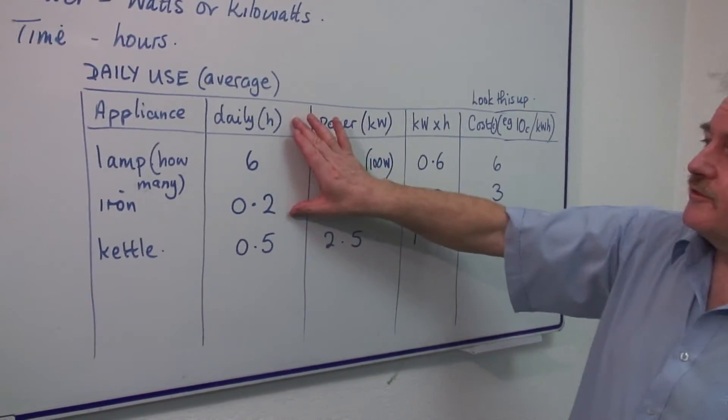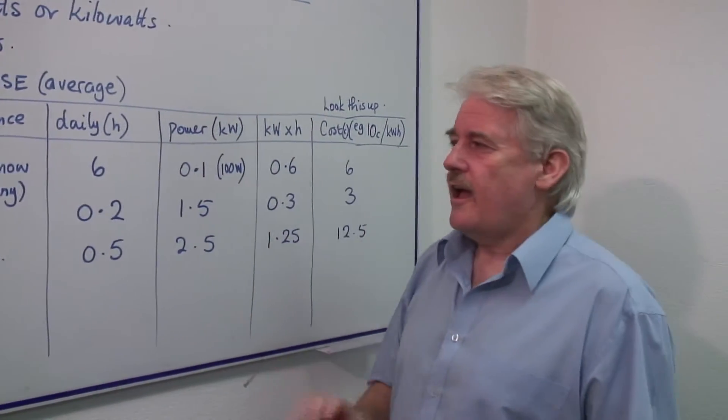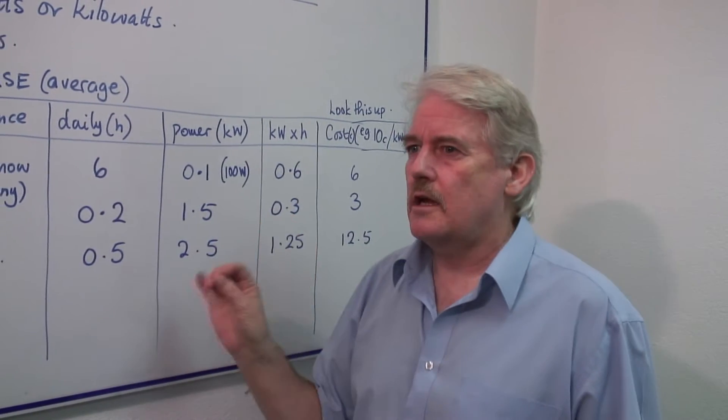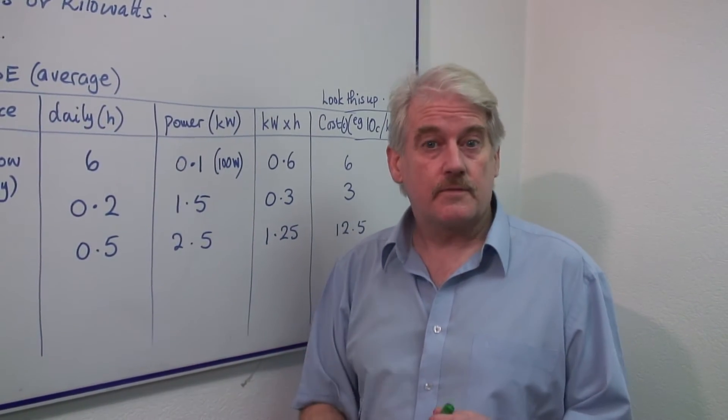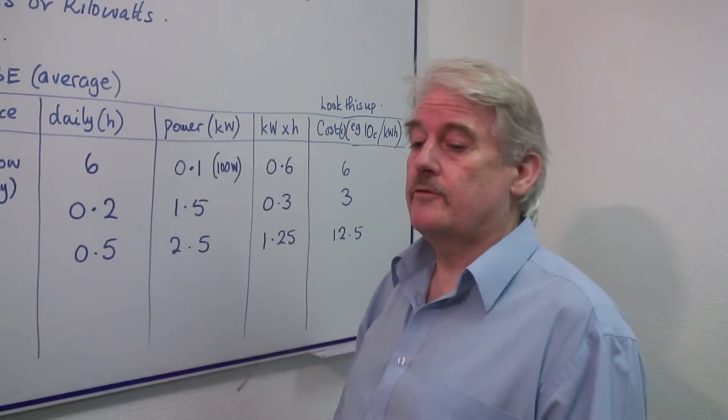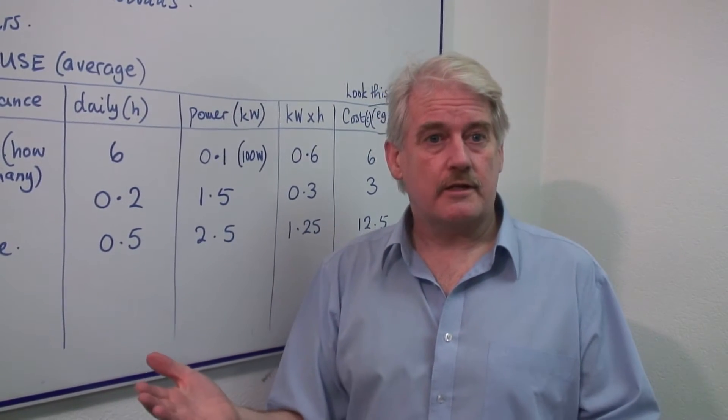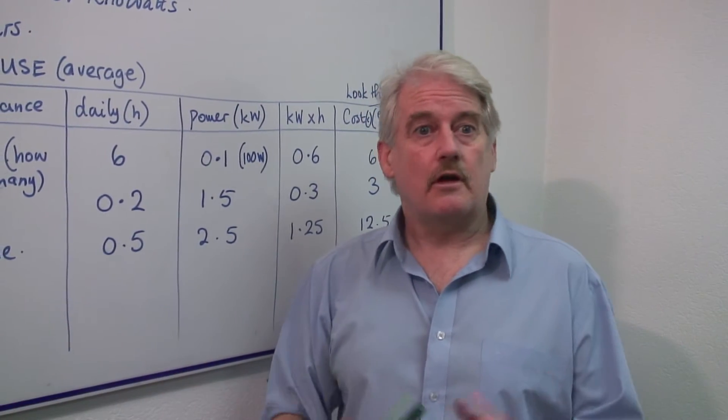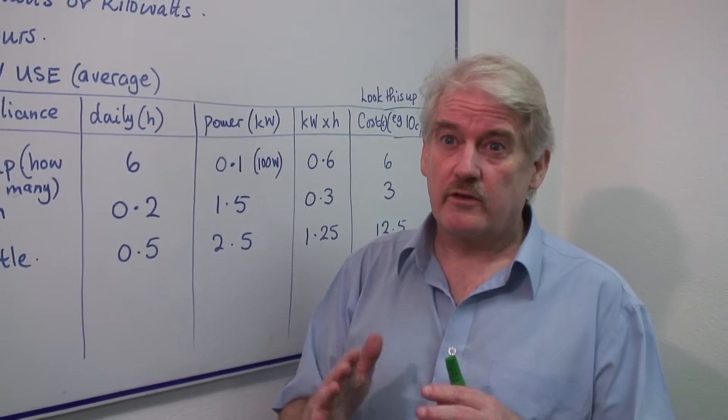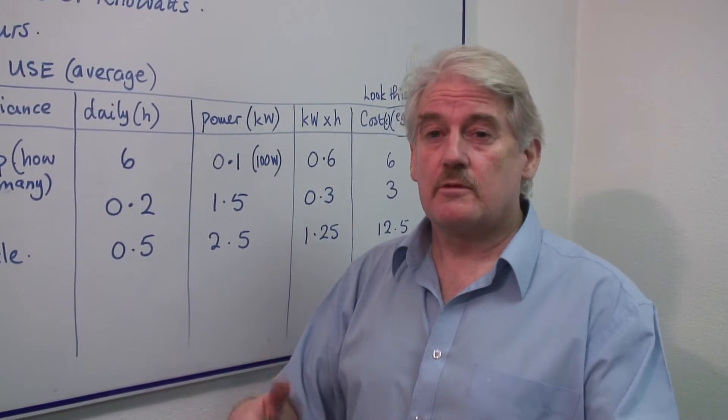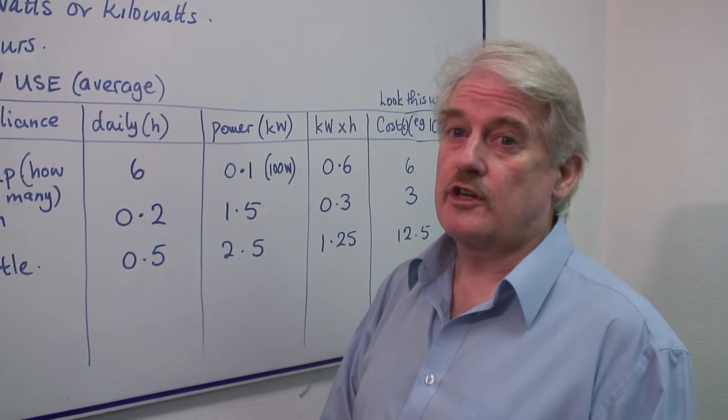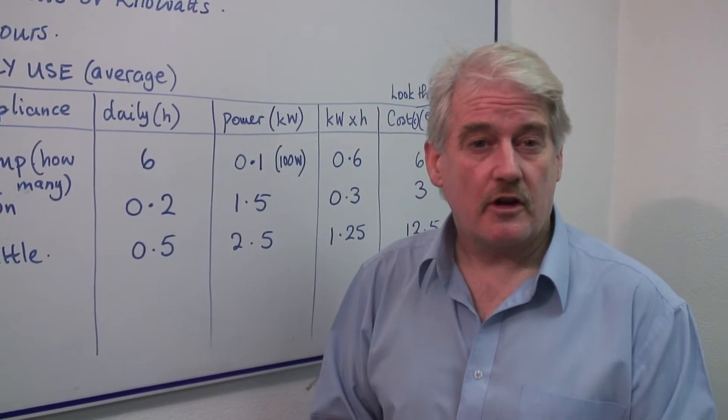Now you have to do a little bit of an estimate. How long each day do you use that device for? Now be very careful. For example, you might have a refrigerator and it might say it's 300 watts. The point is it's only on for a very short time because the motor is only working for a short time and it switches on and off.